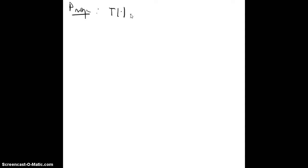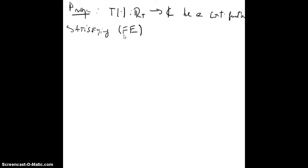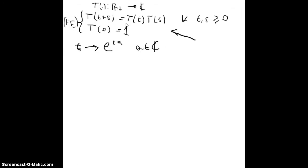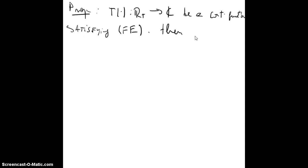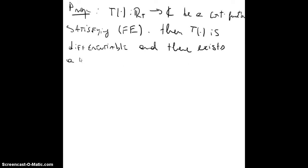Another proposition: let f go from R⁺ to complex numbers be a continuous function satisfying the functional equation f(t+s) = f(t)·f(s). Then f is differentiable, and there exists a unique complex number A such that the differential equation d/dt f(t) = A·f(t) holds.